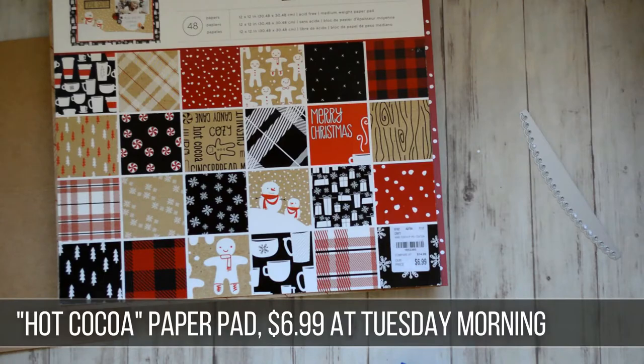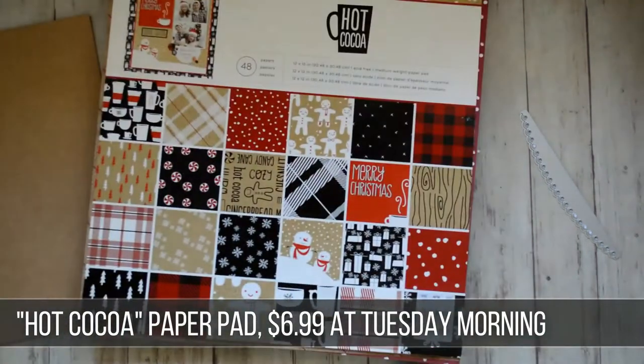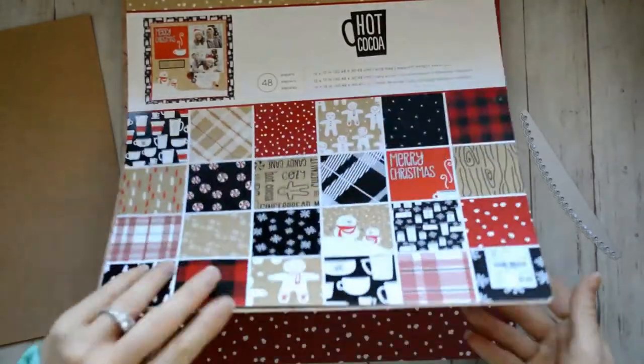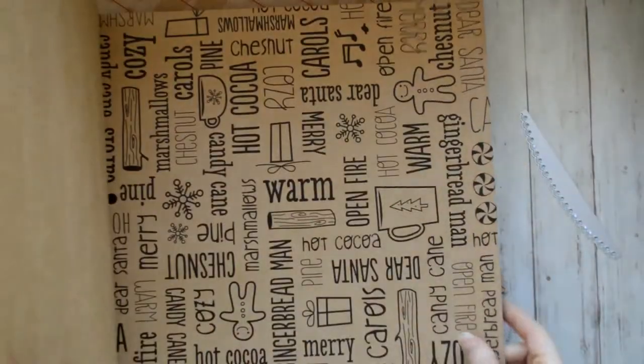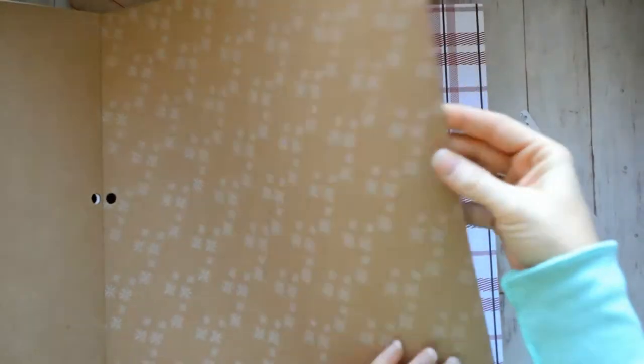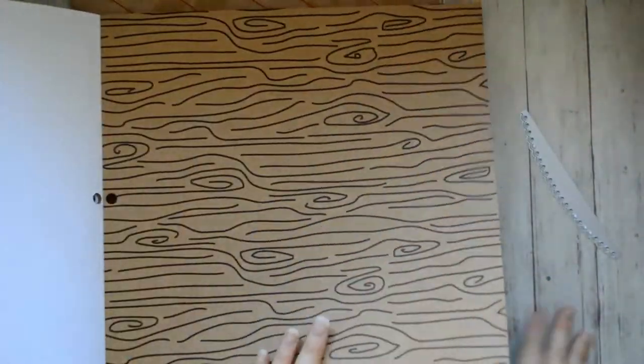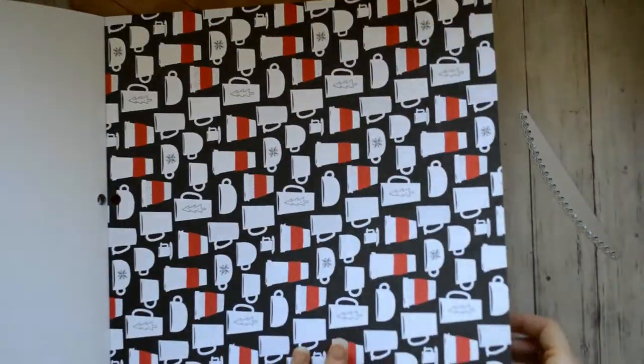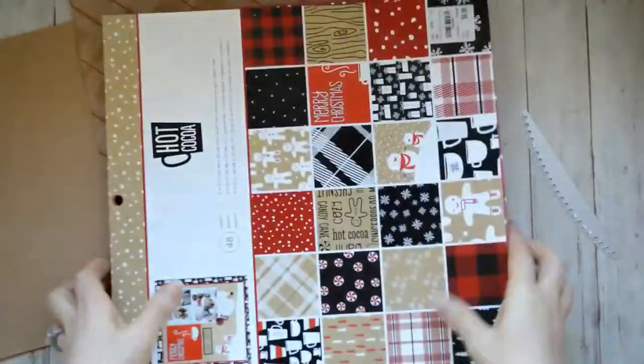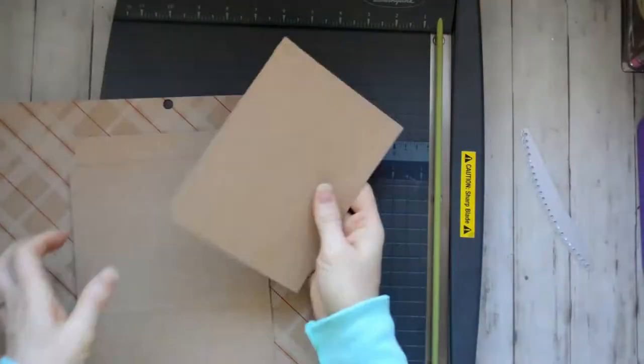And this is a 12 by 12 paper pad that I found at Tuesday Mornings. I think it's so cute. And I do flip through it, show you all the papers that are in it. It is craft paper. And a lot of these actually, I think that you could try to stamp them out and kind of copy that. But I've just started using it, but I really like it. And it was only $6.99.